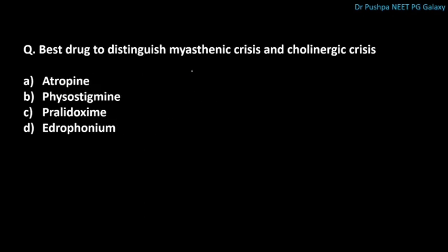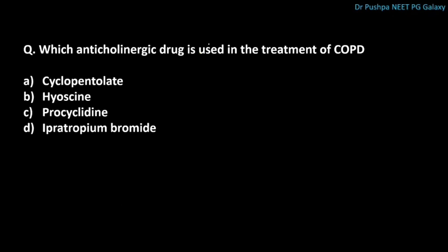What is the best drug to distinguish myasthenic crisis from cholinergic crisis? The correct answer is edrophonium, which is the shortest-acting drug. Which anticholinergic drug is used in the treatment of COPD? The correct answer is ipratropium bromide.